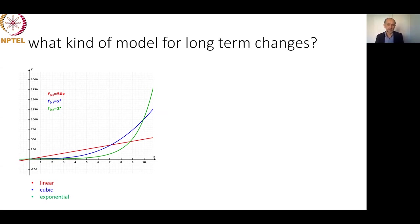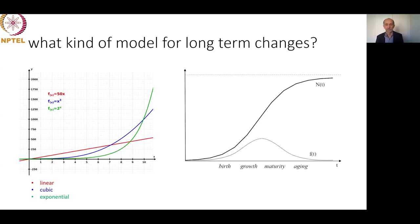A more realistic and practical function is the logistic function, which for a certain period of time closely resembles exponential growth. But the logistic function has the embedded idea that whatever growth occurs is always capped by a certain limitation — and from a certain point in time, the system continues to grow more slowly, approximating an upper limit of growth.